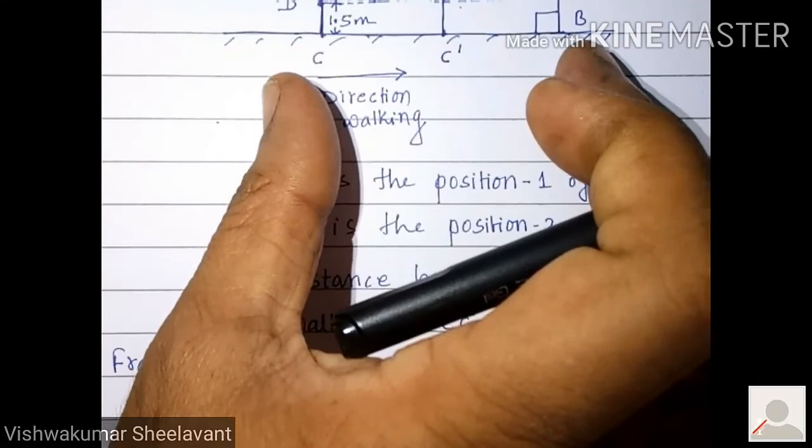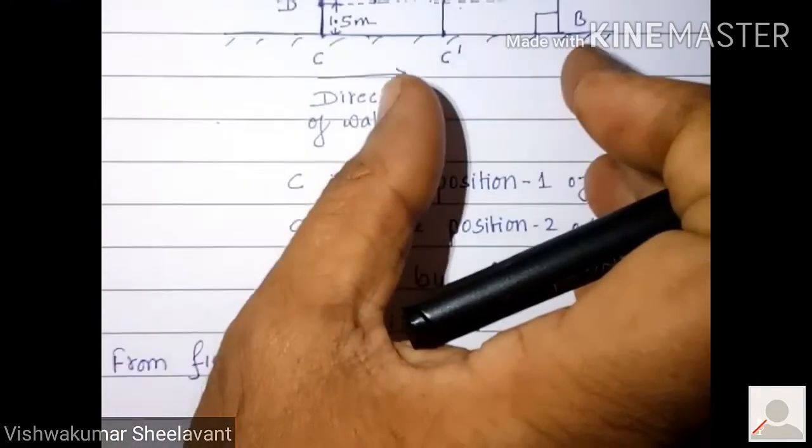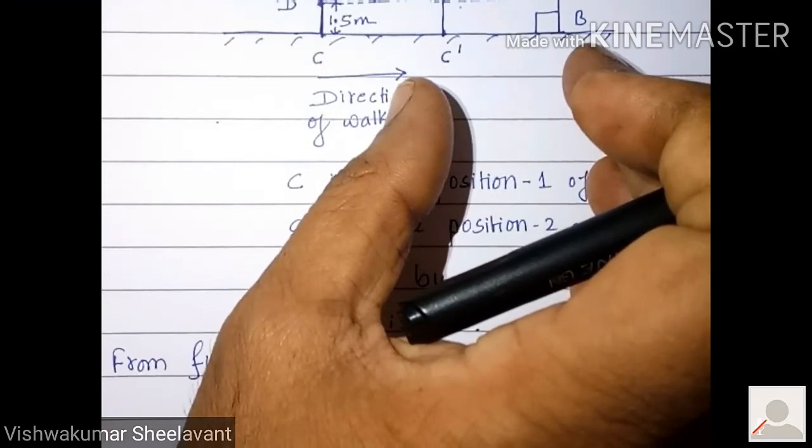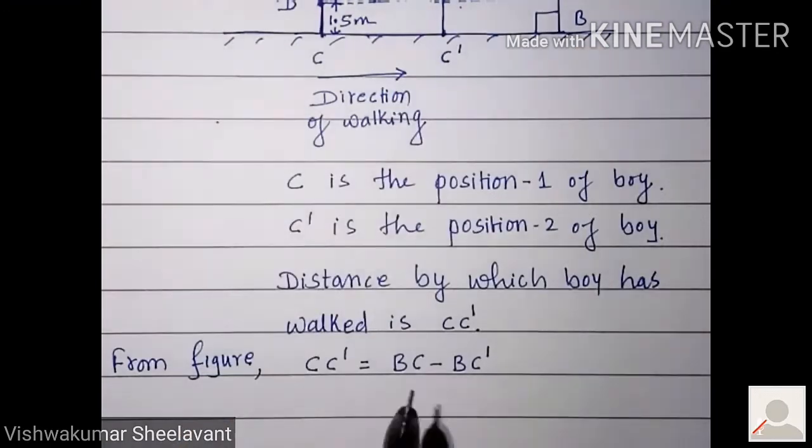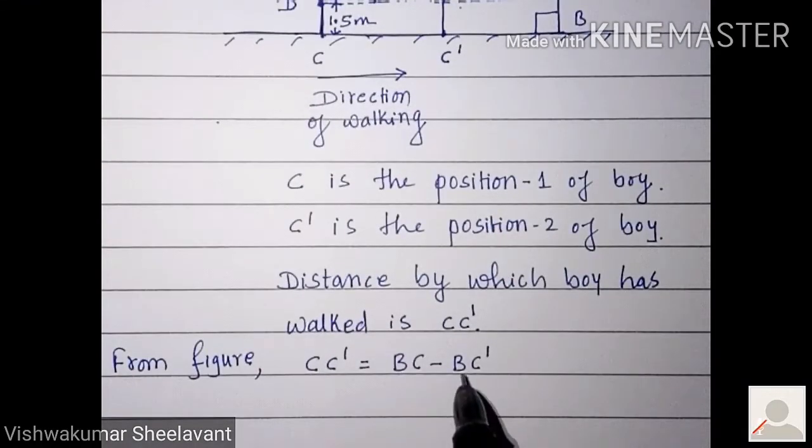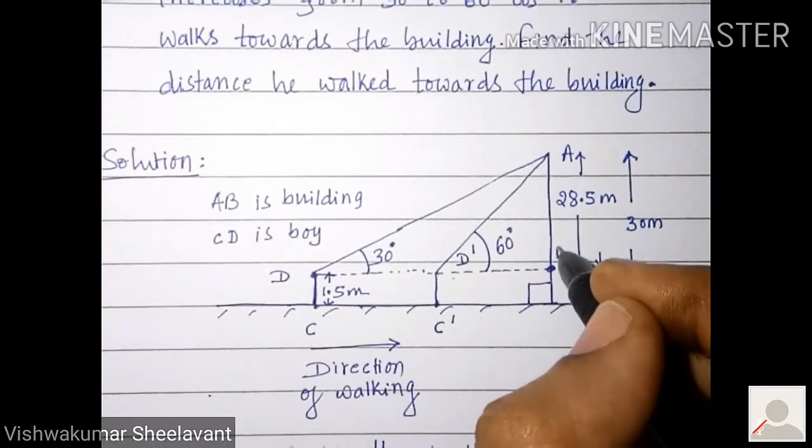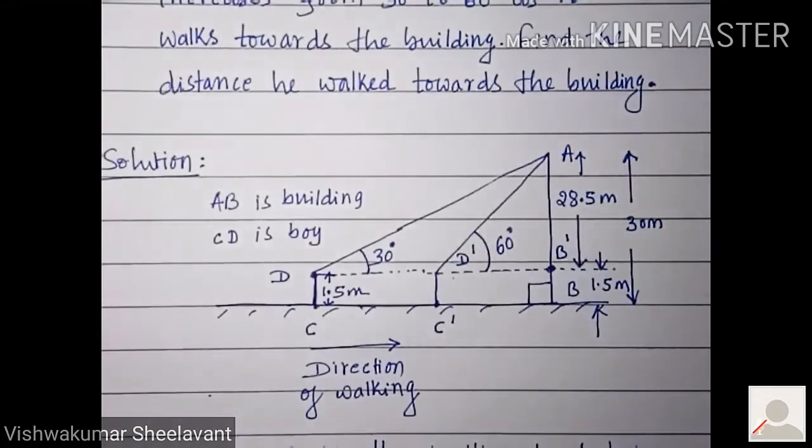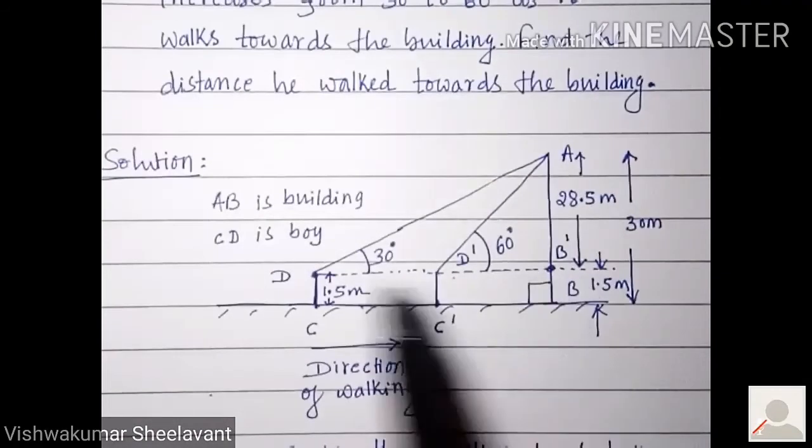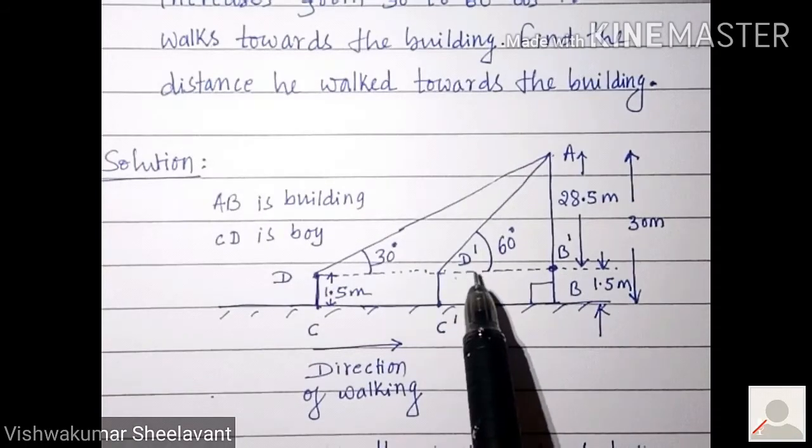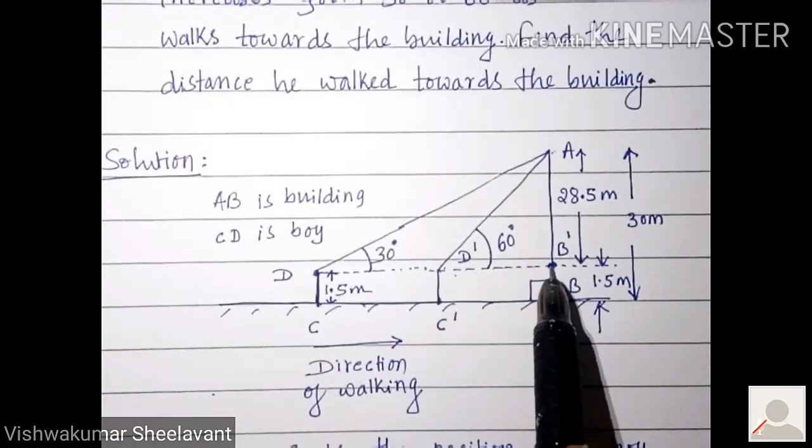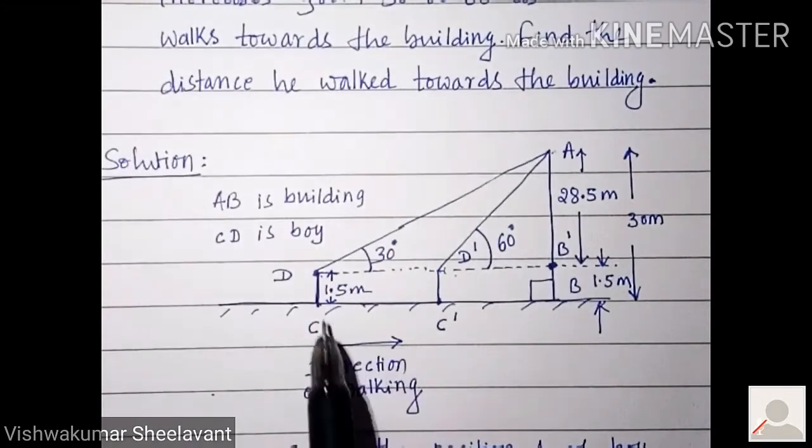Total distance minus distance between second position and foot of the tower. That means now we have to calculate what is BC and what is BC dash. Newly drawn point, call it as B dash. So from triangle A, D, B dash I will be getting D, B dash. From triangle A, D dash, B dash I will be getting D dash, B dash. Is there any relation between D, B dash and C, B? Are they not equal?